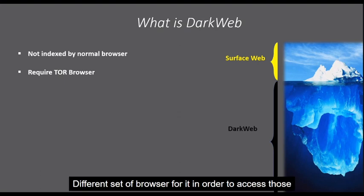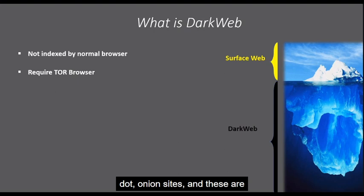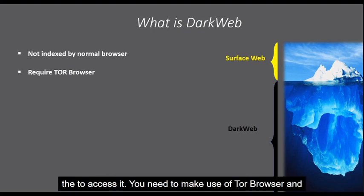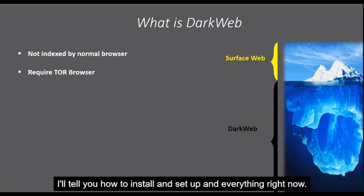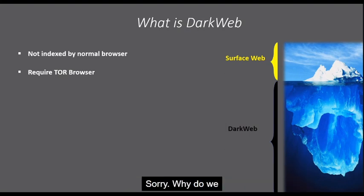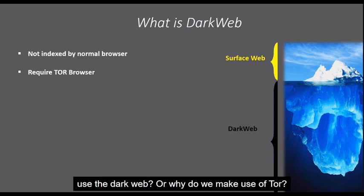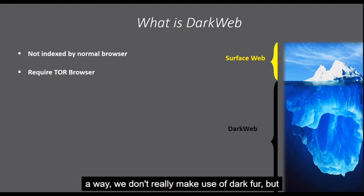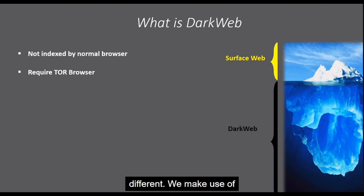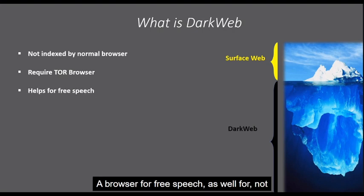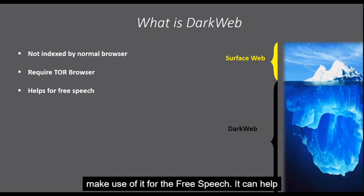As I mentioned, you need a different browser to access those dot onion sites. To access them, you need to make use of the Tor browser — and I'll tell you how to install and set it up. Now, why do we use the dark web, or why do we use the Tor browser? These are different things. We can use the Tor browser for free speech — not necessarily for dark web content specifically, but Tor browser is used for free speech.